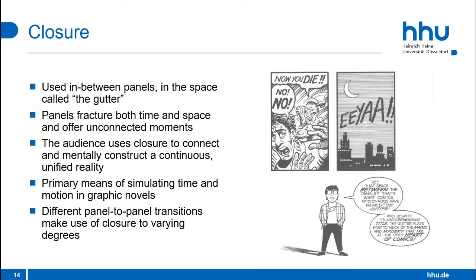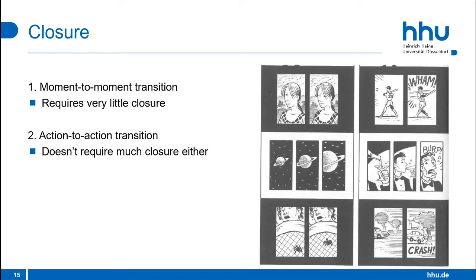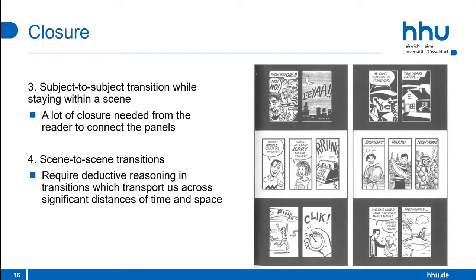This closure committed by the reader is the primary means of simulating time and motion in graphic novels. There are different panel-to-panel transitions that make use of closure to varying degrees. The first is the moment-to-moment transition, which requires very little closure — for example, in one panel a woman has her eyes open, while in the next she has her eyes closed. Then there's the action-to-action transition, which also doesn't require much closure, with just one action following another. In a subject-to-subject transition, while staying within a scene, a lot of closure is needed from the reader to connect the panels.